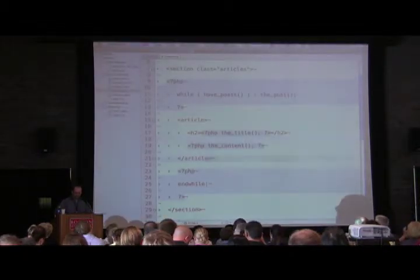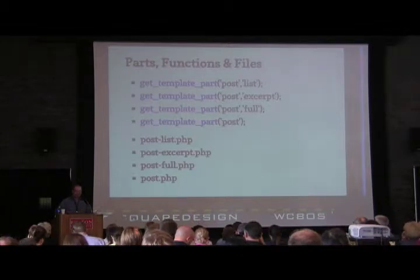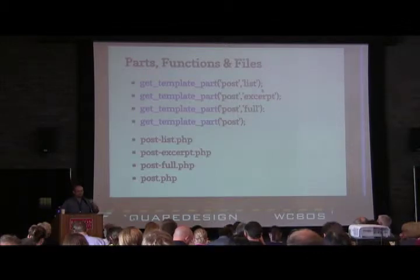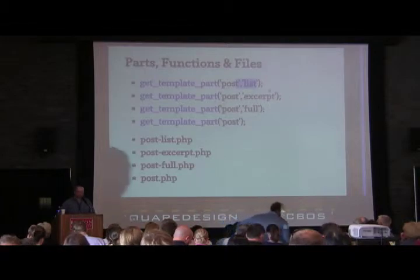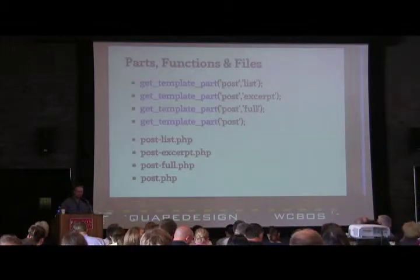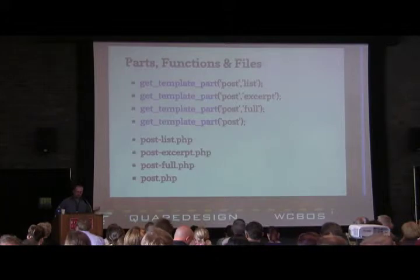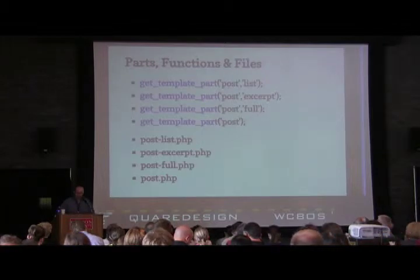I'll take the article block I've made and customize it: for the homepage or excerpt view showing a list of posts, I create a template part called 'post-list'. For single post displays I create one called 'post-full' that shows the full content. When I call get_template_part with 'post-list', it looks for post-list.php in my theme directory. If it doesn't find that, it falls back to post.php. So if you embed the tags before creating the files, you're covered.